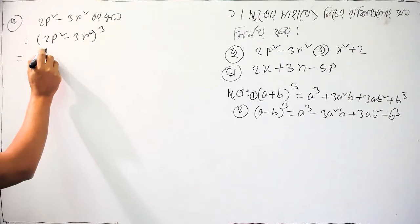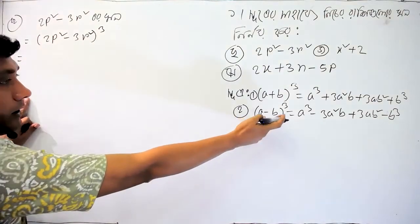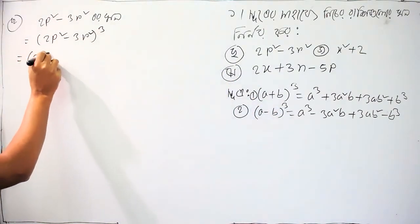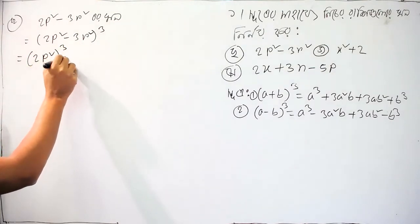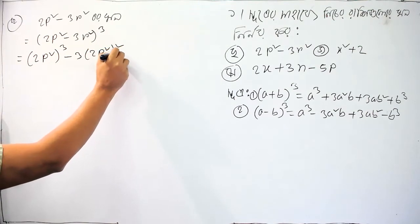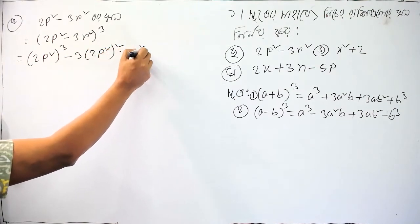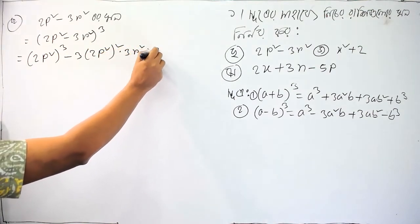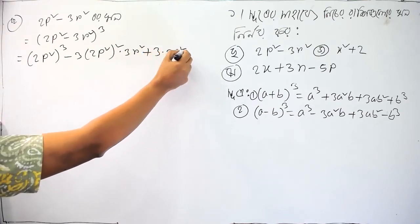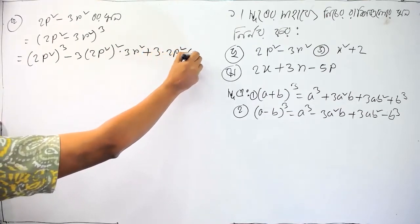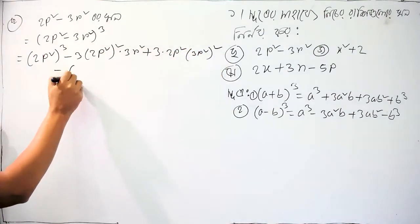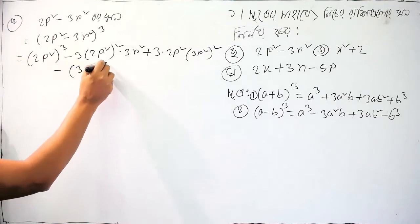Let's see. The formula for (a minus b) whole cube is: a cube minus 3a square b plus 3a b square minus b cube.